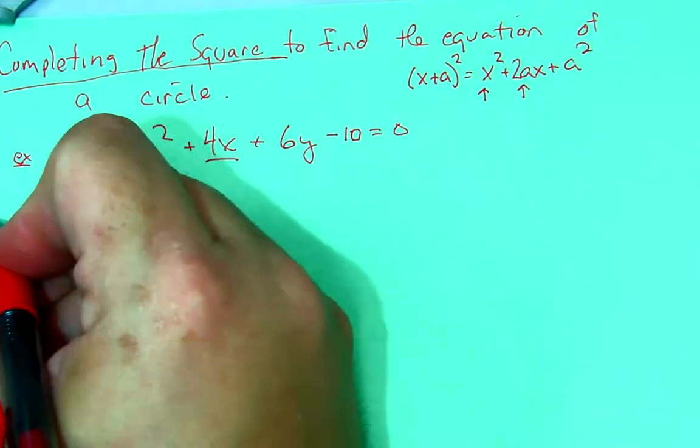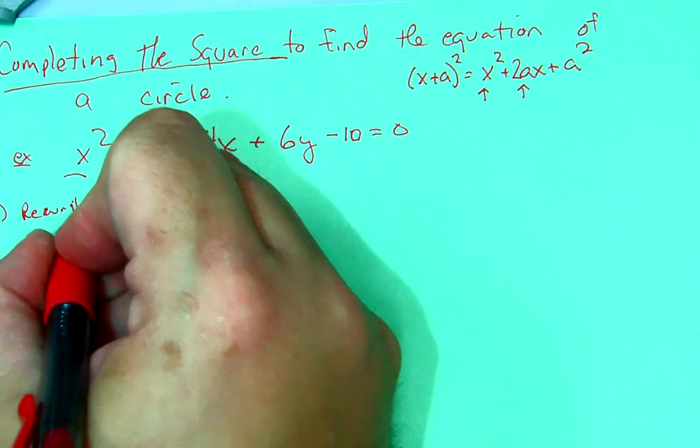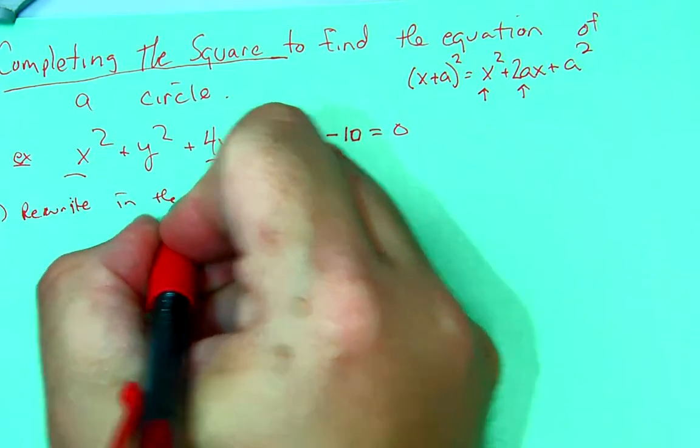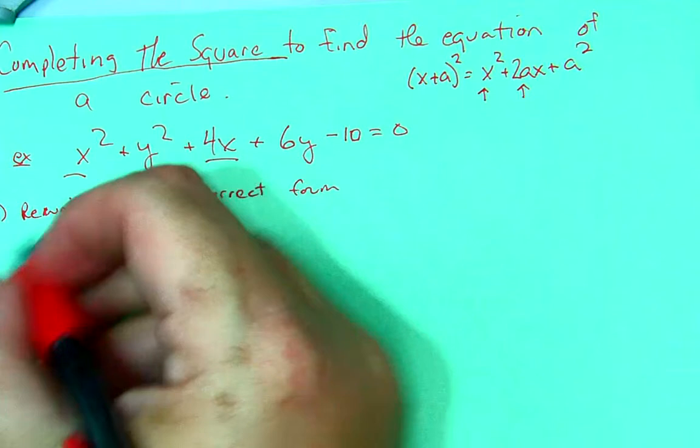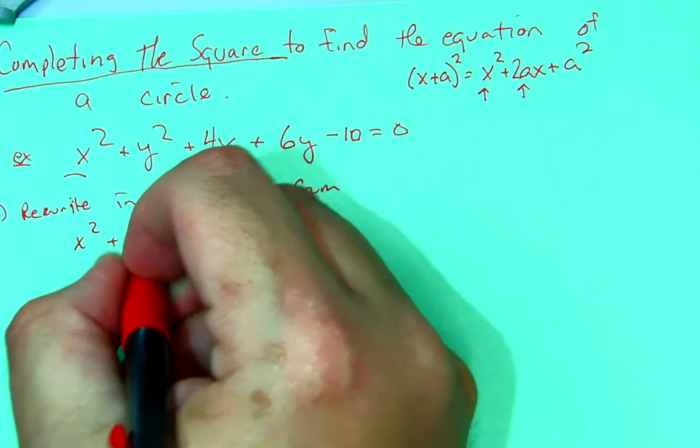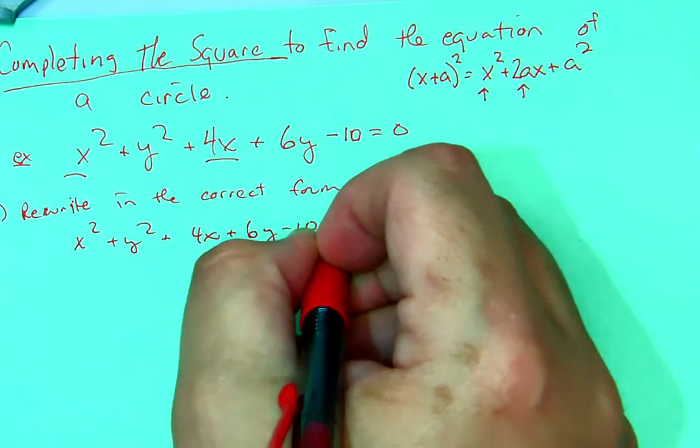The first step: rewrite in the correct form. So, I'll take that x squared plus y squared plus 4x plus 6y minus 10 is equal to 0.